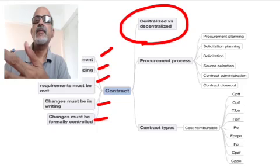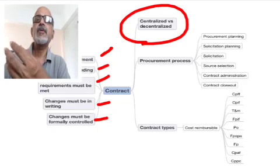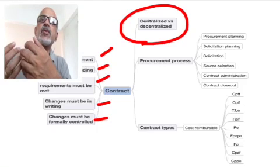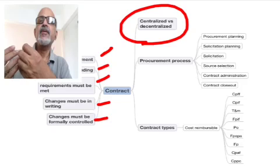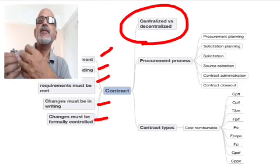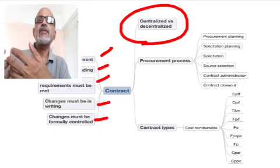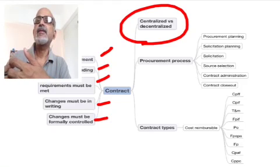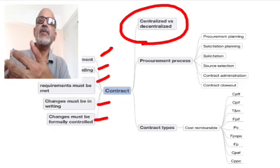In centralized contracting, the contract personnel cater to multiple projects, so your project may not get sole attention. Whereas in decentralized contracting, the contracting personnel is committed full-time to your project, meaning it gets top priority. These are some of the pros and cons, and this is a major decision one has to take during planning procurements.